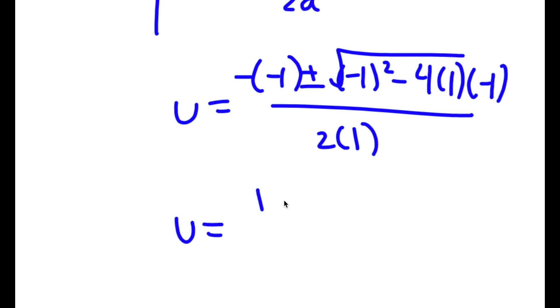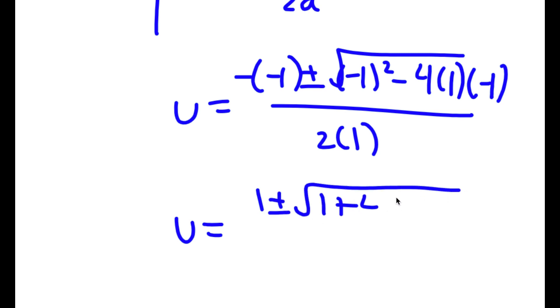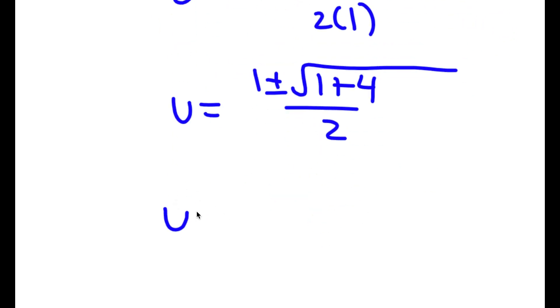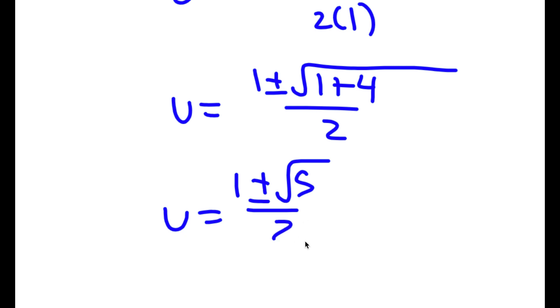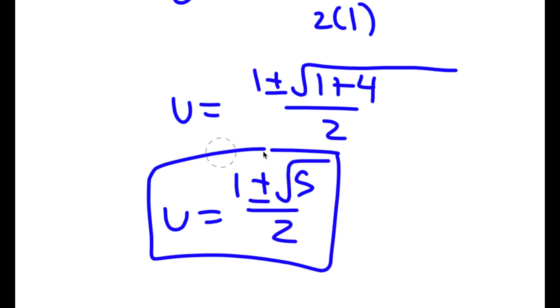This is equal to 1 plus or minus the square root of 1 plus 4 over 2, which is equal to 1 plus or minus the square root of 5 over 2. So these are two more solutions.